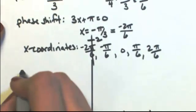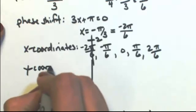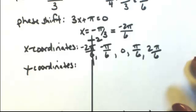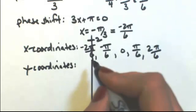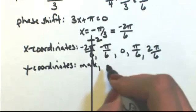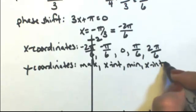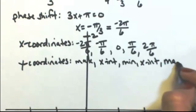So then all that's left to do is find the y-coordinates. And that's by using the pattern of cosine. So cosine starts at a max, then an x-intercept, then a min, then an x-intercept, and then it ends at a max.